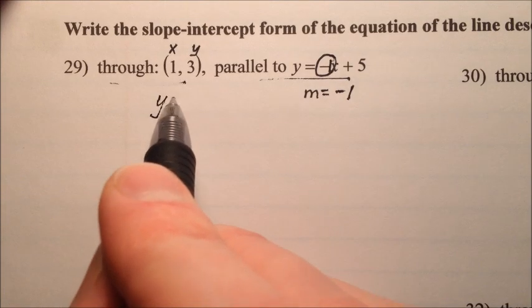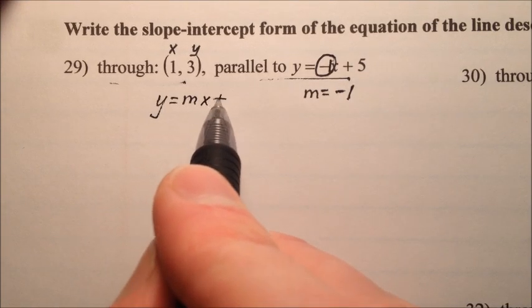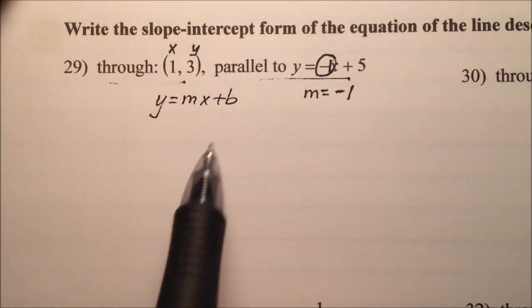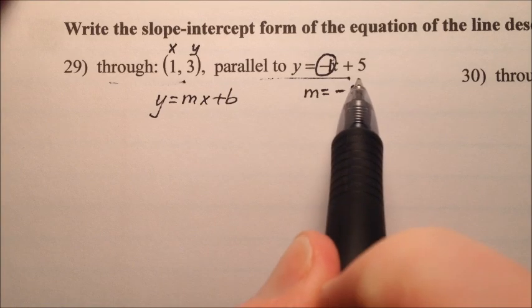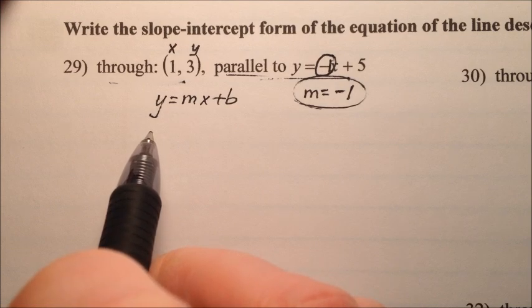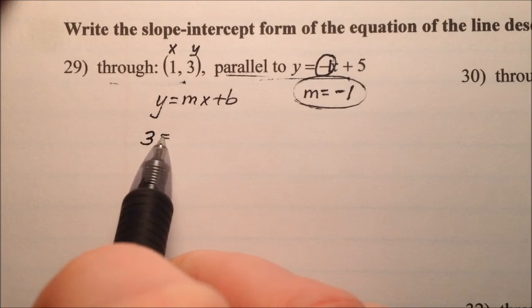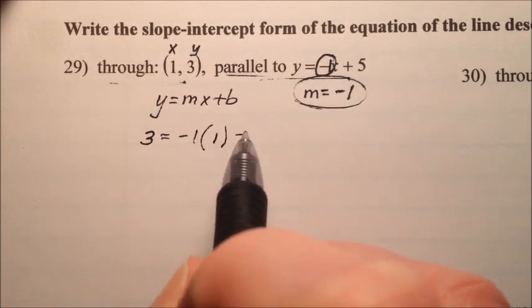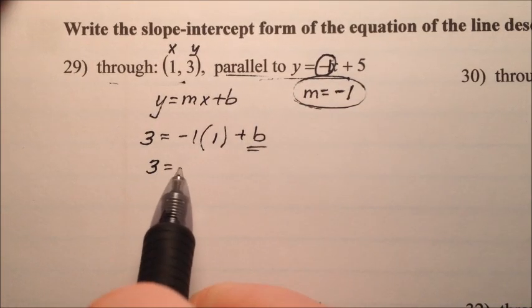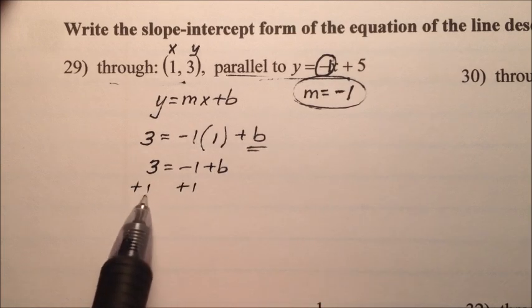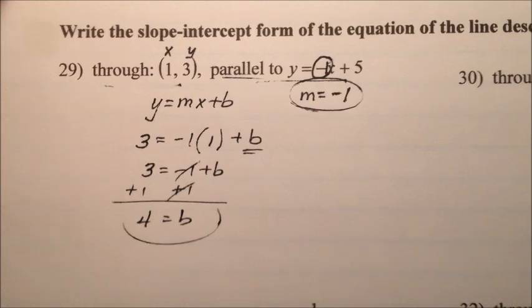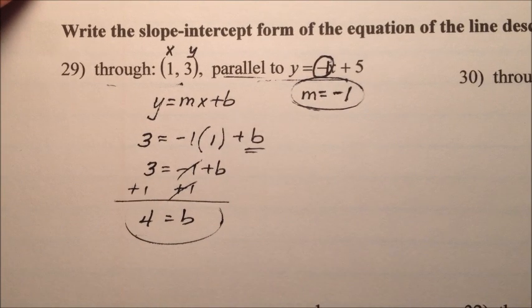So we can use this and do y equals mx plus b, and we can plug our 3 in for y, negative 1 in for m, 1 in for x, and we can solve for that b. The reason that we can use this same slope is because we're told the lines are parallel. So let's go ahead and do that. The 3 goes in for the y, the negative 1 for the m, the 1 for the x, and then plus b. So that becomes 3 equals negative 1 plus b, and then we just add 1 to each side.